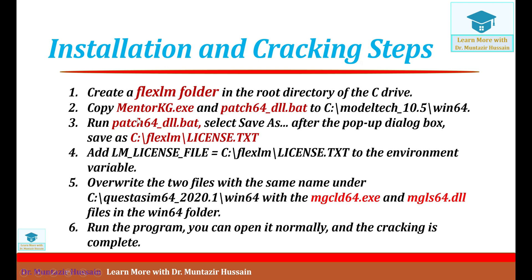The next step is to run the copied file — that is the patch64_dll file. When you copy these two files from the crack folder to the win64 directory, just run the patch64 file. After running this patch64 file, a pop-up window will appear and a license file will be generated with the name 'license.lms.txt'. Save that license file by clicking 'Save As' and save it in the flxlm folder you created in step one.